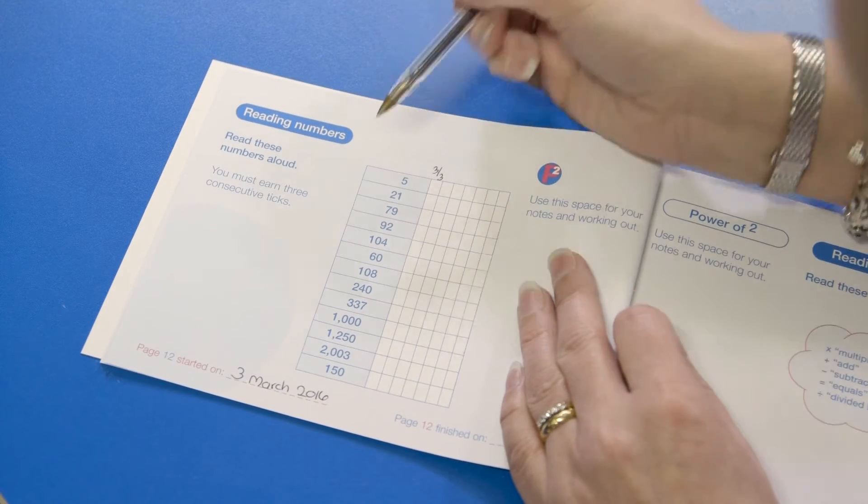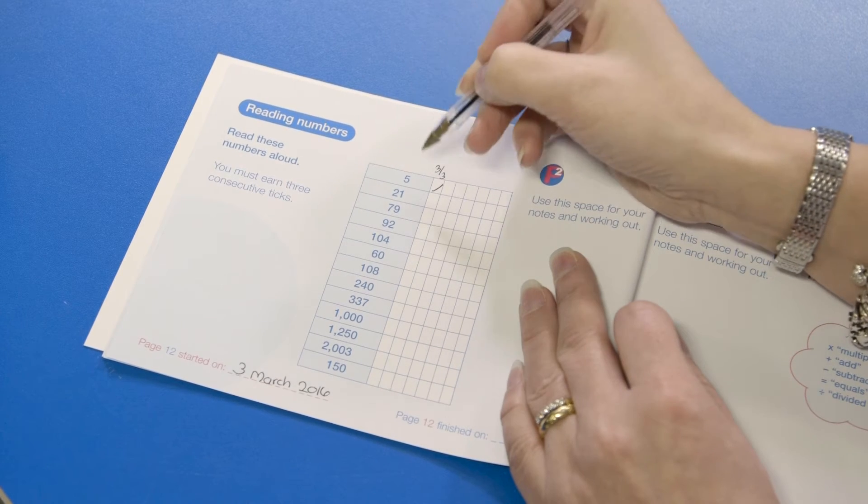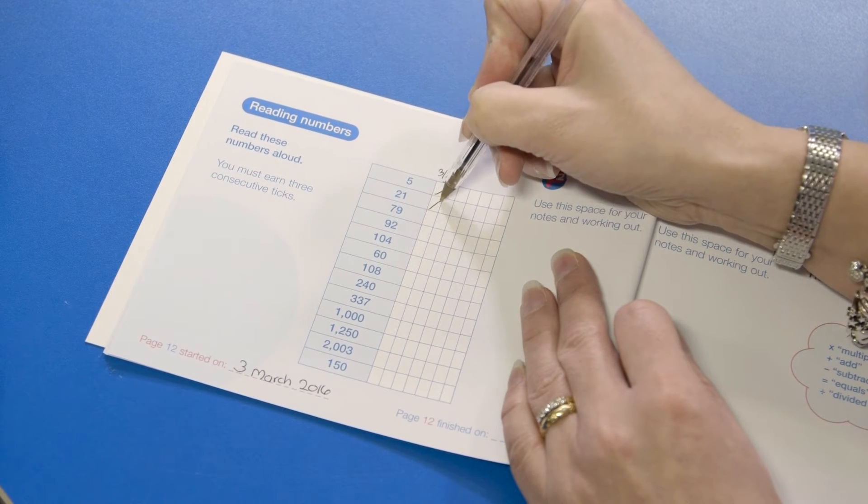You're now ready to start using the book. For each question, if they give a correct answer, mark it with a tick. If they give a wrong answer, mark it with a dot. Don't write in the actual answer.